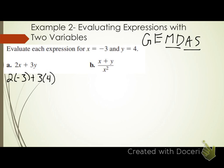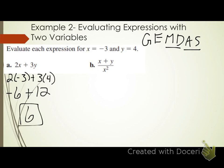Two times negative 3 gives me negative 6. Then 3 times 4 gives me 12. Now I'm down to negative 6 plus 12. No more multiplication or division. What's negative 6 plus 12? Six. There's my value when x equals negative 3 and y equals 4.